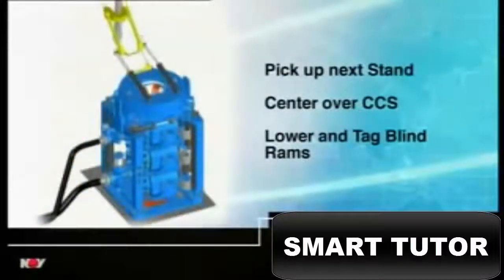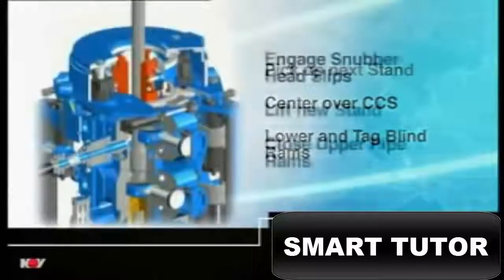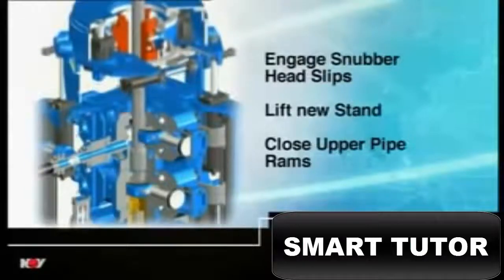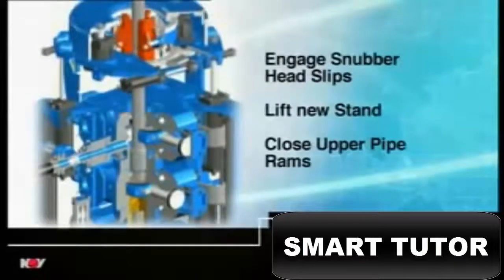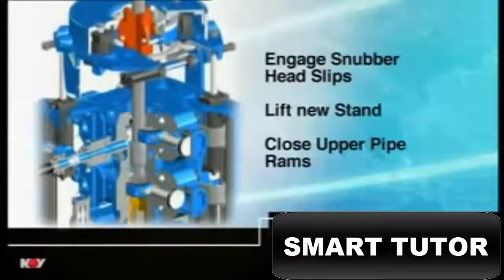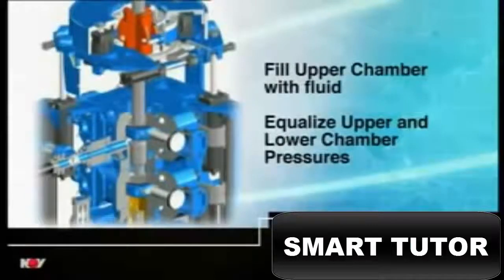The next stand is picked up, centered by the pipe guide over the CCS, and slowly lowered, to gently tag the closed blind rams. The snubber head engages, and lifts the new stand a few inches. The upper pipe rams are closed, and the upper chamber filled with fluid, equalizing the pressure, between the upper and lower chambers.